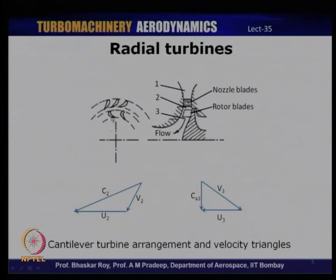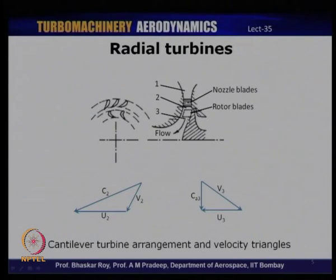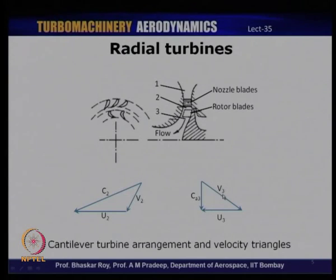The absolute flow leaves the nozzle at an angle C2. Because of the blade speed U2, the rotor sees a relative velocity V2 at its inlet. As the flow exits the rotor, the flow becomes axial — for nominal design, flow leaves the blades axially. V3 is the relative velocity at rotor exit. U2 is greater than U3 because both stations are at different radial locations rotating at the same rotational speed.